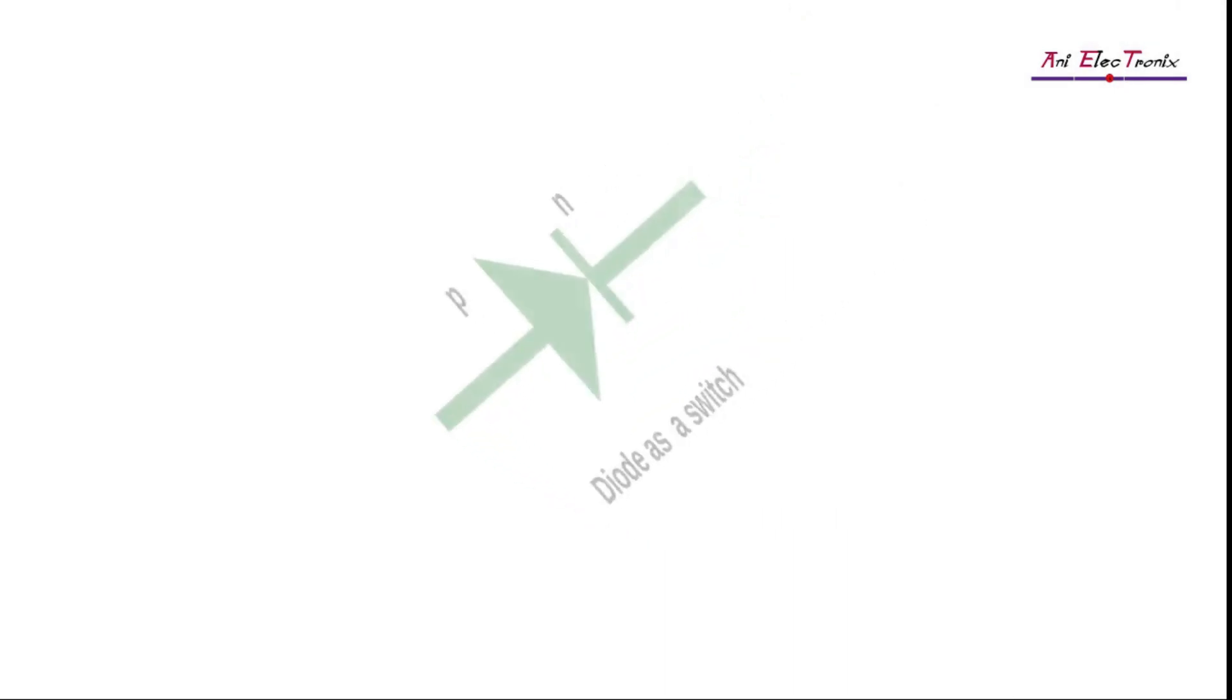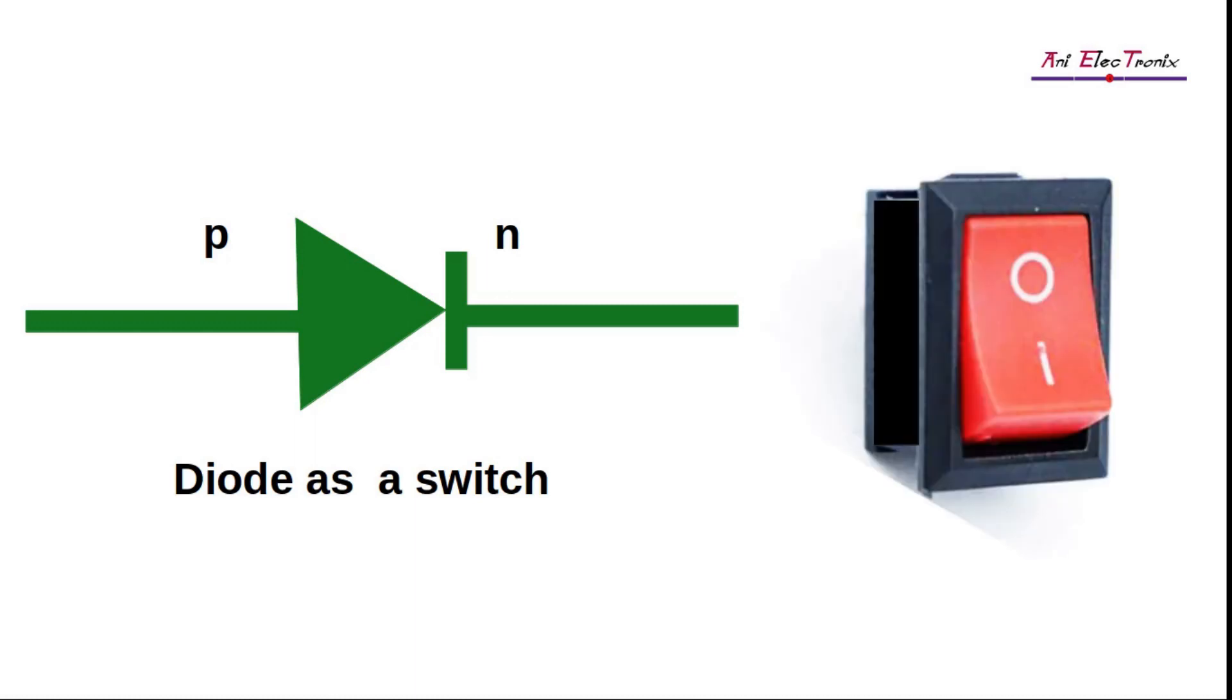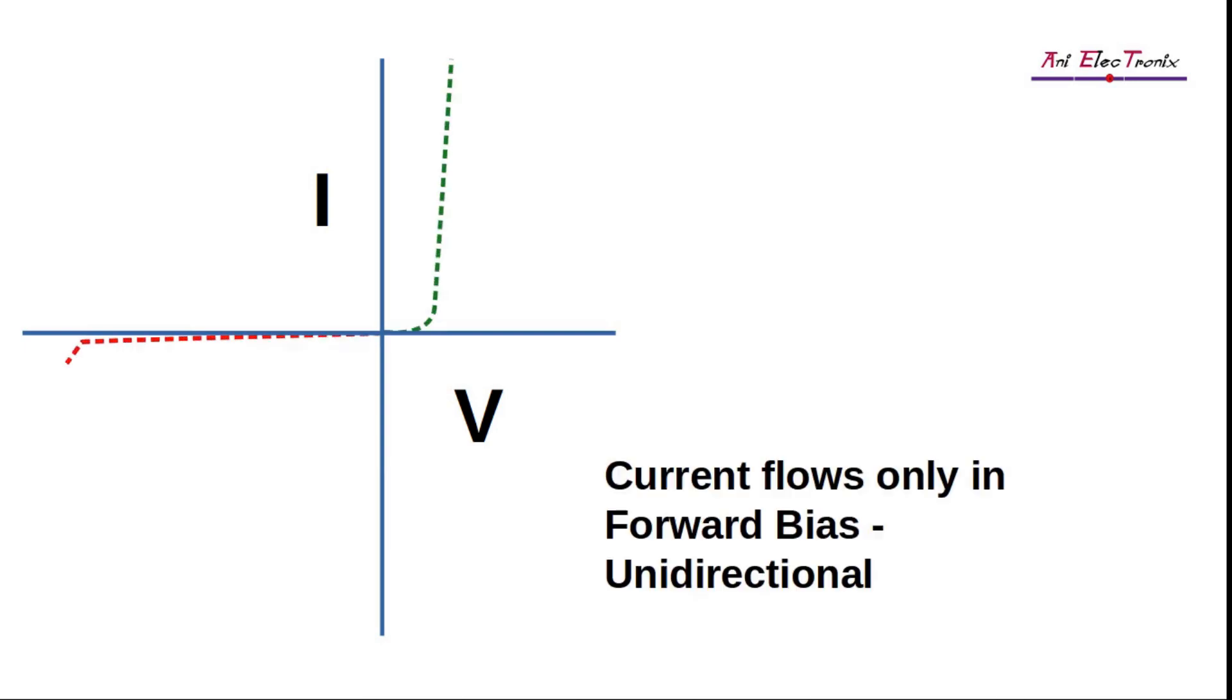But a question comes: why do we need a PN junction diode as a switch while we can use a mechanical switch in circuits? Let's try to explain this query first. First of all, a mechanical switch can occupy extra space compared to a PN junction diode. Secondly, a mechanical switch has movable contacts. And most importantly, for a mechanical switch, it is very difficult to control the switching movement automatically. But for a diode, we can control the switching functions very easily due to the unidirectional conduction characteristics of PN junction diode.